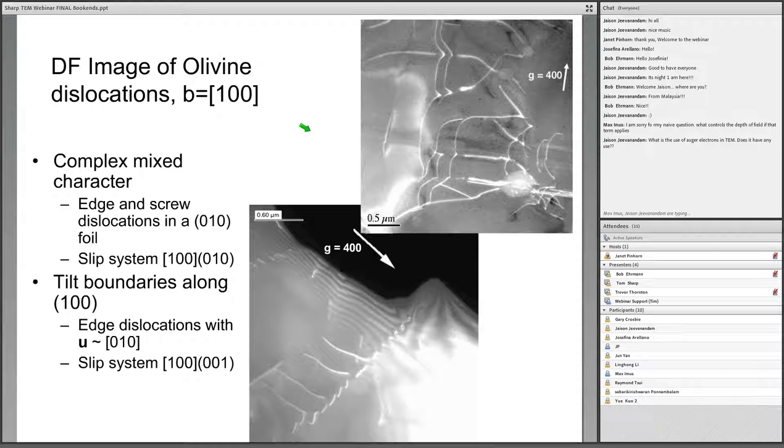This is an example of some work that I did some time ago on the mineral olivine looking at dislocations. This is an old technique, but it's a very important technique for imaging defects. In the upper image, the upper image is taken with a diffraction condition illustrated right here. You'll see G equals 400. That's the diffraction vector used, and that's the orientation of the diffraction vector used. In that image, we're seeing dislocations that have the burgers vector 1, 0, 0. You can see complex arrangement of dislocations. This is a great way to image defects.